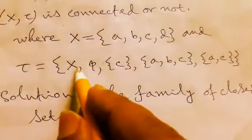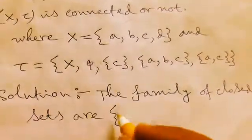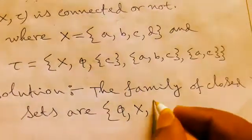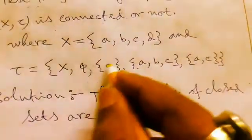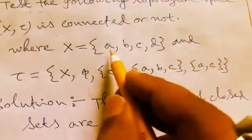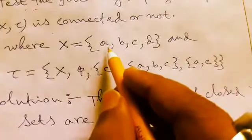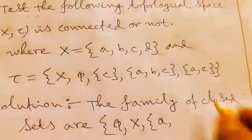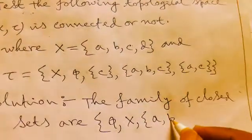So it is clear X complement is φ and φ complement is X. For {c}, we take the complement from {a,b,c,d}, so X minus {c} gives the element {a,b,d}, which is closed because {c} is a basic open set.